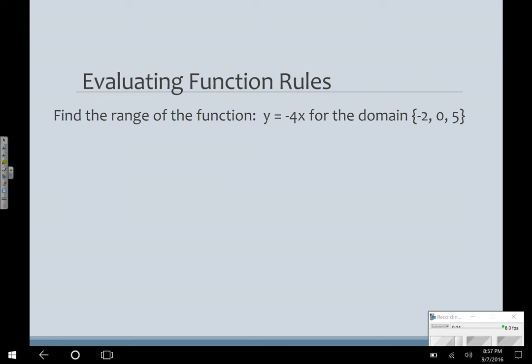If I'm evaluating a function rule, it says find the range of the function. The function is y = -4x for the domain of -2, 0, and 5. Remember, y and f(x) can be used interchangeably. So I could rewrite this as f(x) = -4x. And now, I've got three different values for my domain. So I have three different problems to solve. And that's where the notation as opposed to the y comes in really nice. Because even though my f(x) is equal to -4x, I can keep track of what I've plugged in. So f(-2) equals -4 times -2. Remember, I'm keeping the left side alone and just working on the right side. So that's positive 8.